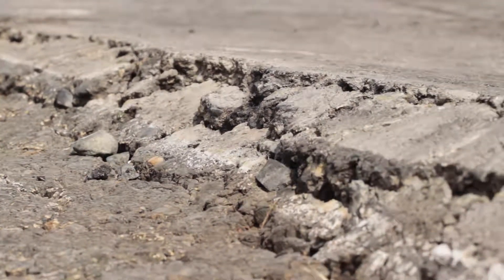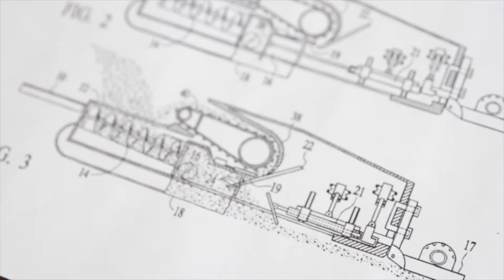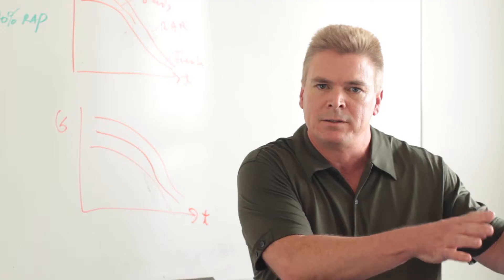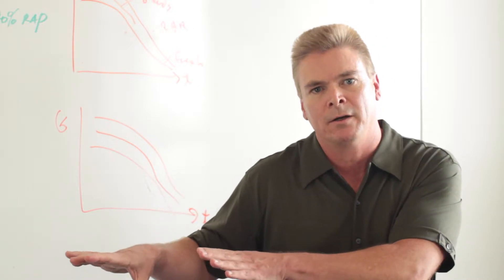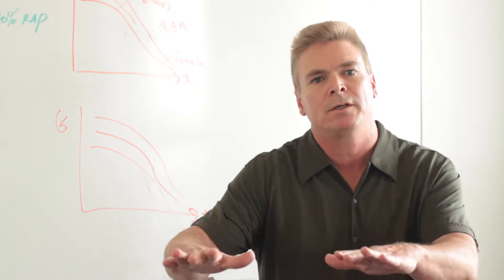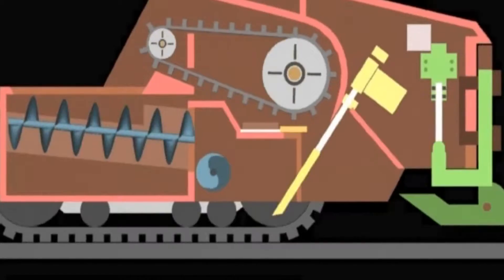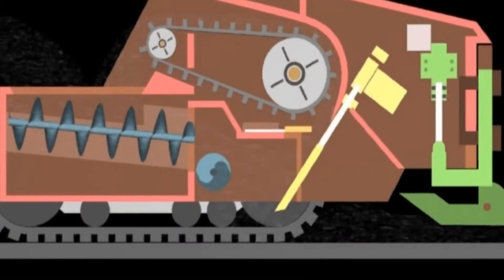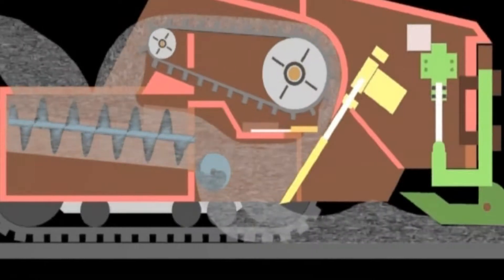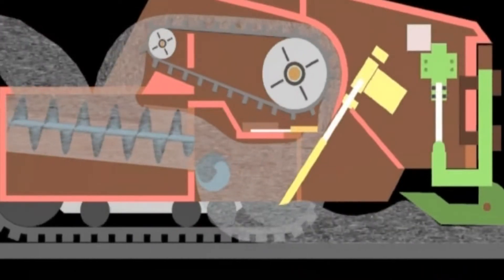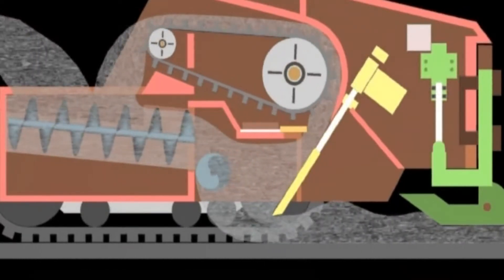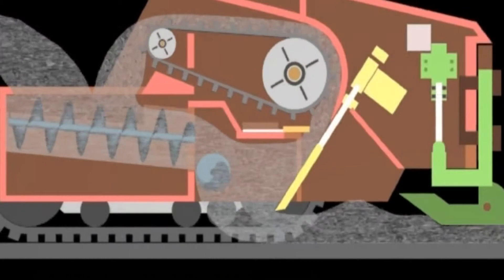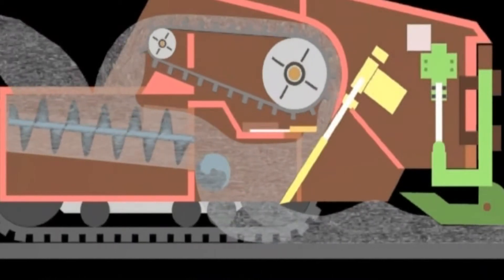The 3D asphalt paving machine that I have designed can address a dip here, a bump here, a rut over there in one single pass, providing more material or less material where it's needed. Once compacted, it will all level out and provide the smooth flat driving surface that we desire.